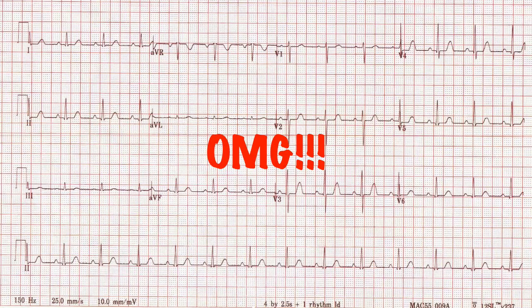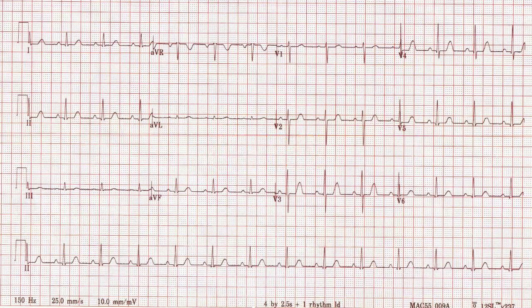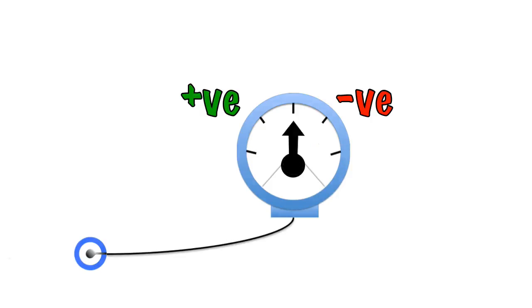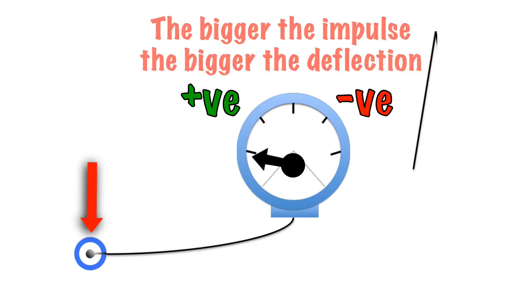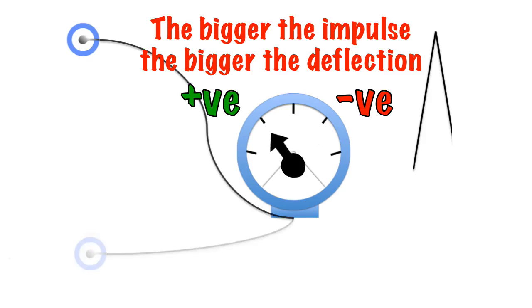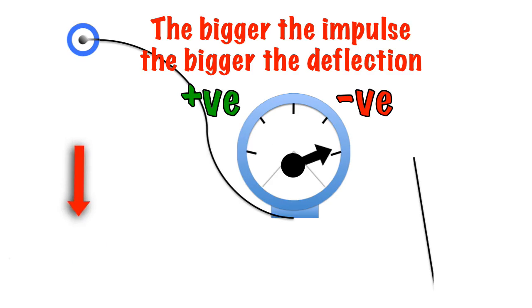It's going to be your job to interpret these, so let's look at some basics. When there's no electrical impulse, the ECG trace remains static on what is termed the baseline. If an impulse travels towards the electrode, it will cause a positive or upward deflection. If it is travelling away from the electrode, it will cause a negative or downward deflection.